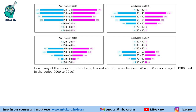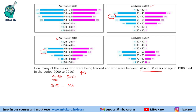The fourth question: how many males who were being tracked and who were between 20 and 30 years of age in 1980 died in the period 2000 to 2010? In 2000, they will be in the age range 40 to 50 (20 years later), and in 2010 their age should be 50 to 60. In 2000, the number of males aged 40 to 50 is 205. In 2010, those same individuals are in the 50 to 60 range, leaving 165 males. So 205 minus 165 equals 40 such males died during that period.